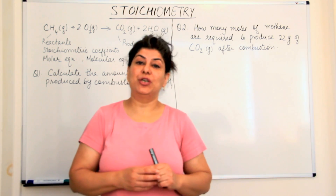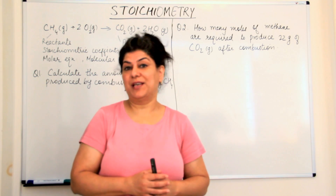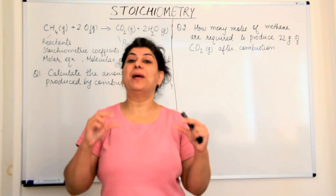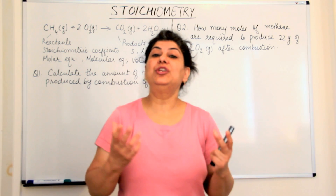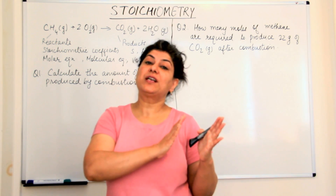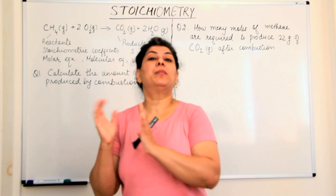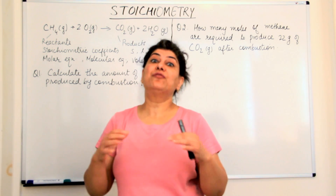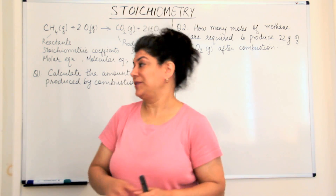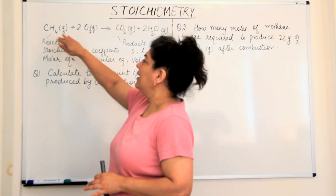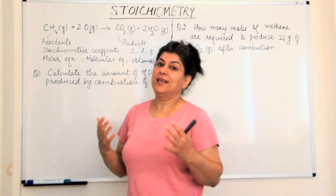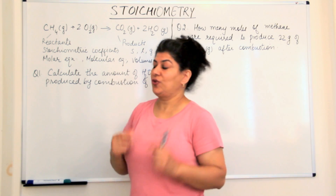In the previous video, we did how to balance chemical equations. So once you have the required balanced chemical equation, you can use it to calculate the amount of product that could be produced or the amount of reactant that would be required to obtain a desired amount of product.